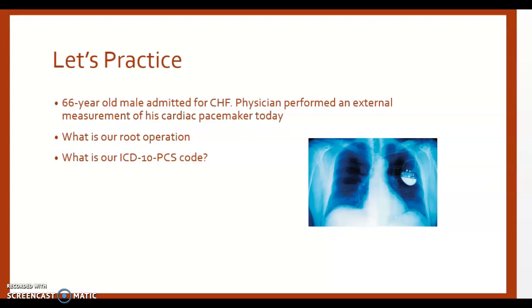Let's go to our index and look up measurement — I'm on page 78 in my PCS index. Under measurement, what were we measuring? Cardiac activity. So under measurement, look for cardiac, and then under cardiac you'll see pacemaker. This is a great example of where we're given all seven characters of our code right in the index, but I still recommend verifying in the table.